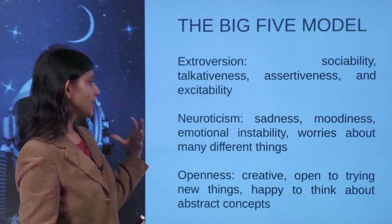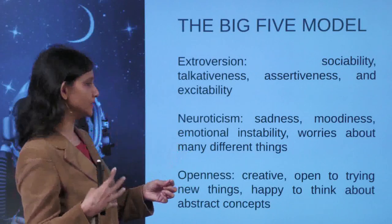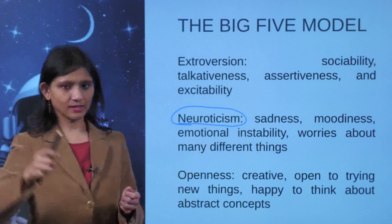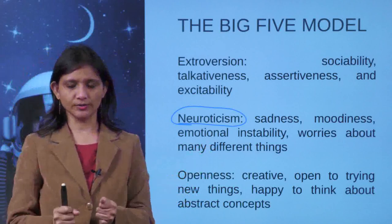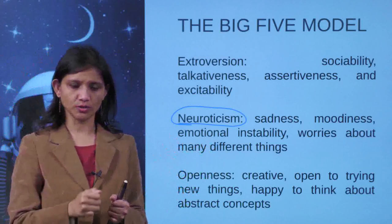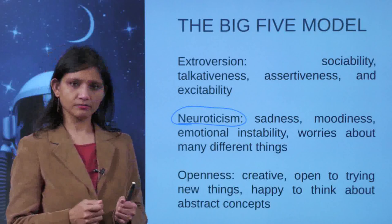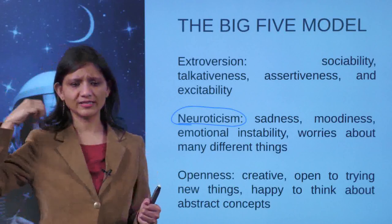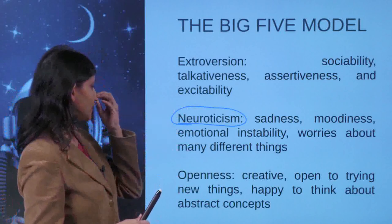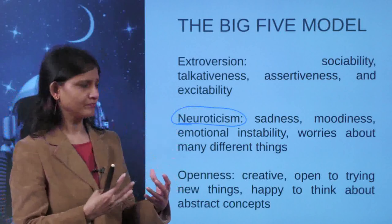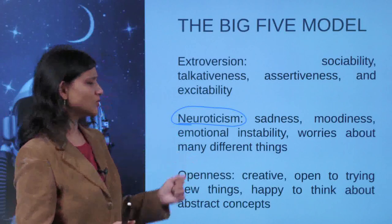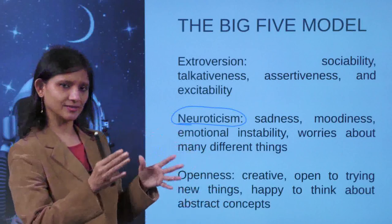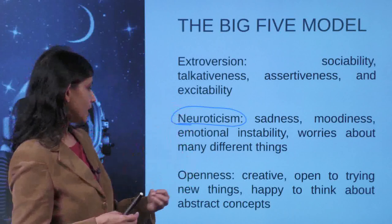Neuroticism — sadness, moodiness, emotional instability, worries about many different things. There are children who often feel very emotional or sad, or worry for no reason. You keep on worrying, always engrossed with negative thoughts. Neuroticism means when you feel sad, when you are worried, when you cannot control your negative thoughts or your emotional stability is not there. These kinds of people are categorized under the model called neuroticism.